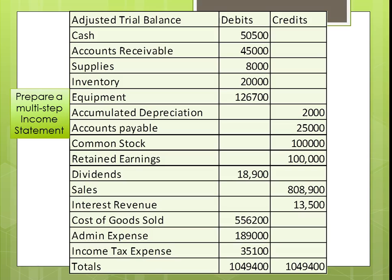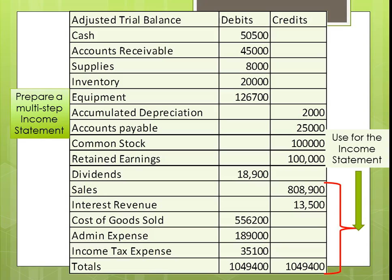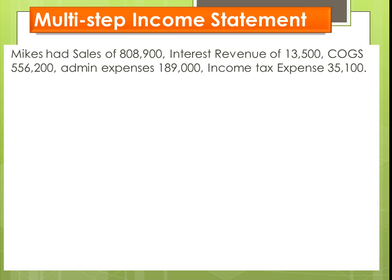Let's prepare a Multi-Step Income Statement. The first thing we need is an adjusted trial balance, which means we've done all of our adjusting entries. This is the second trial balance and is the one we use to prepare the financial statements. It is always presented in financial statement order. We would start with the bottom part, which would be all of our revenue and expense accounts. Here's a summary of that information.